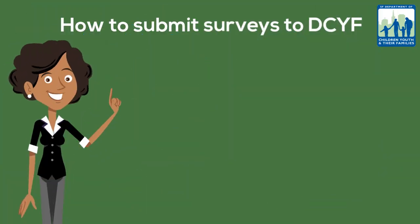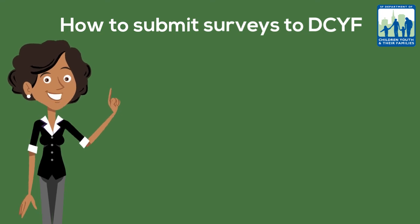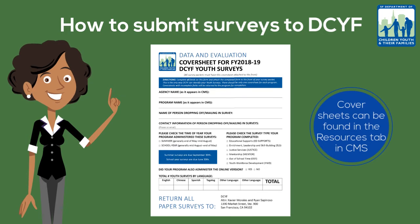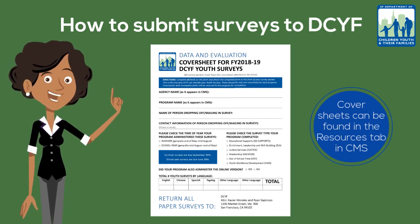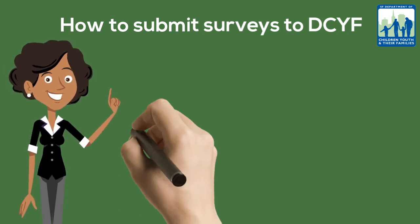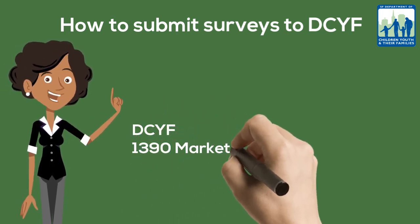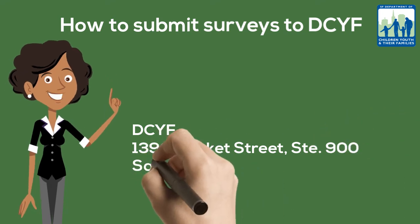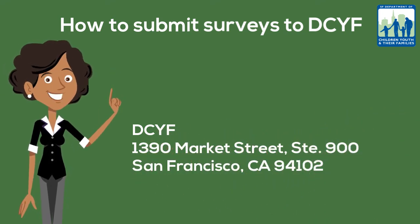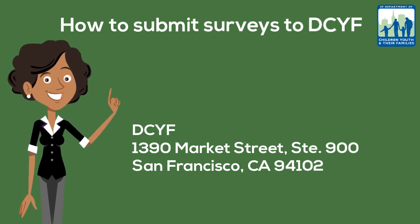How to submit surveys to DCYF. Paper surveys need to have a cover sheet. Cover sheets are the only way to identify your program's youth surveys, so be sure to complete all fields carefully. Paper surveys should be dropped off or mailed to DCYF at 1390 Market Street, Suite 900, San Francisco, CA 94102. Online surveys are automatically submitted to DCYF, so no extra work is needed there.